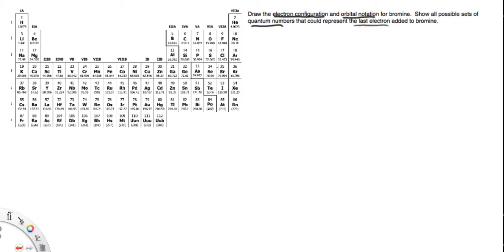Bromine is right here. It's on the fourth period, and here we have the S block, here's the D block, the D filling elements, and the P filling elements. So our last electron is going to be 4P5, so we want to do everything up to that.